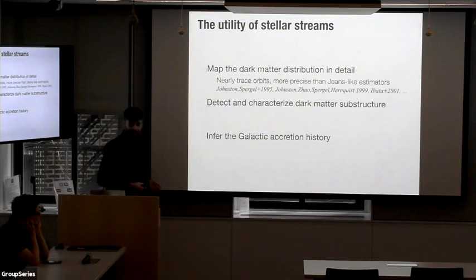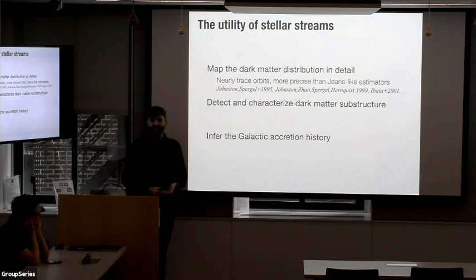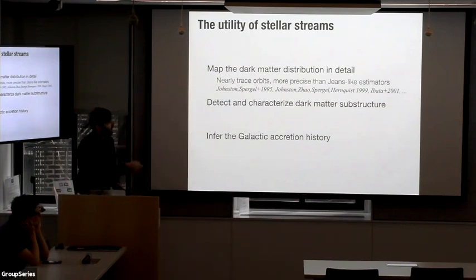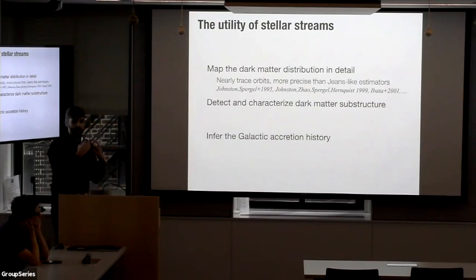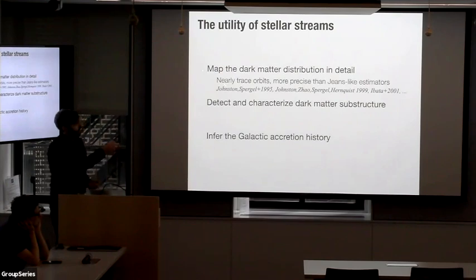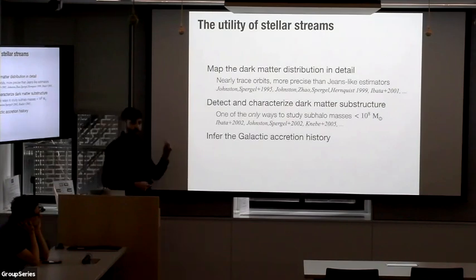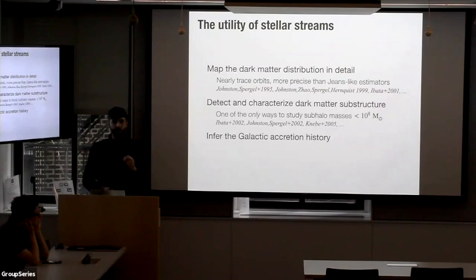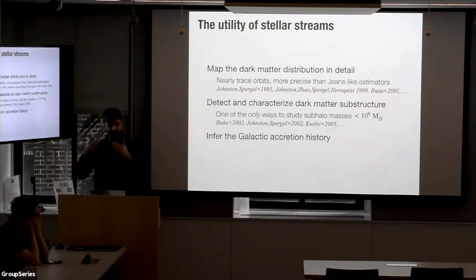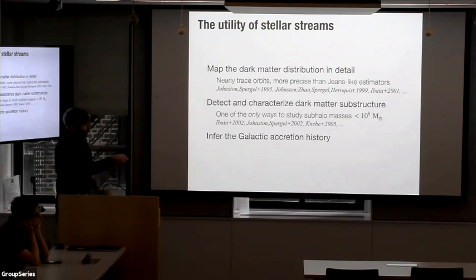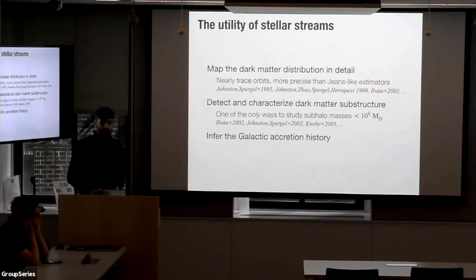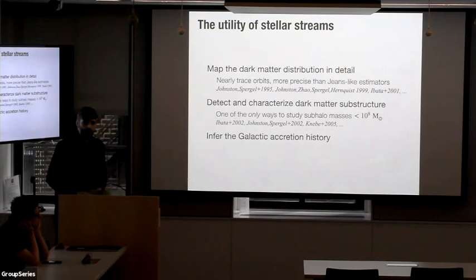It was realized pretty early on by David and Catherine and many other people that streams nearly trace orbits, and so they provide a lot of information about the underlying mass distribution in the Milky Way. They're also extremely kinematically cold, so if you have a passing substructure or sub-halo, the impulse it imparts on a stream will leave a record in the stream's density distribution that we can see later on. They're one of the only ways we have to study the really low-mass end of the dark matter mass spectrum.